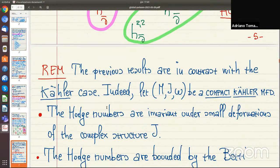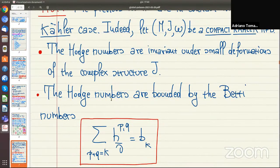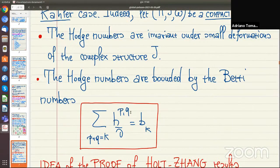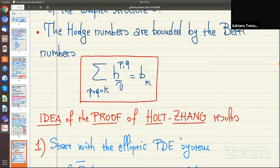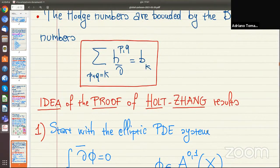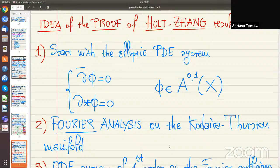We now focus on H^{1,1}_{del-bar}. For an almost Kähler metric it equals b^- + 1; the natural question is what we can say for H^{1,1} when g is a general almost Hermitian metric. There are some differences between the almost Kähler and Kähler cases: for a compact Kähler manifold the Hodge numbers are invariant under small deformations of the complex structure, which is no longer true here, and the sum of h^{p,q}_{del-bar} equals the k-th Betti number.